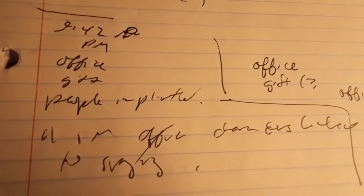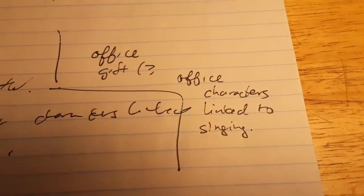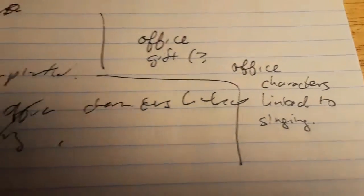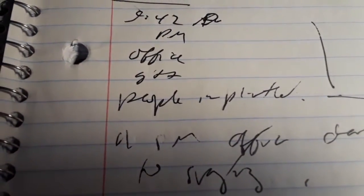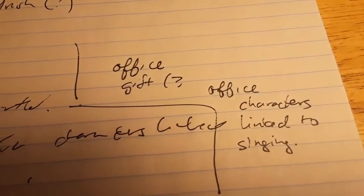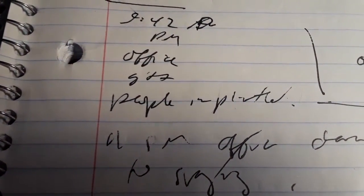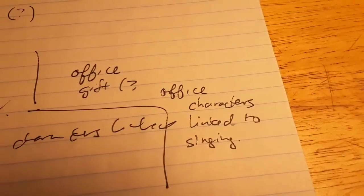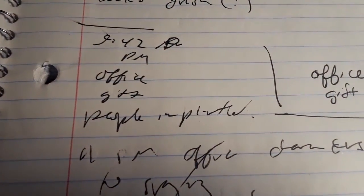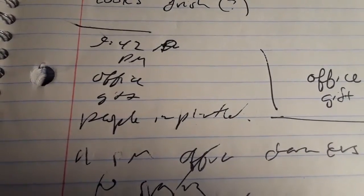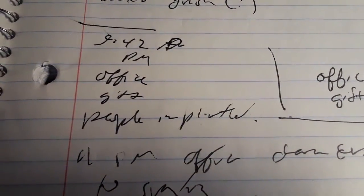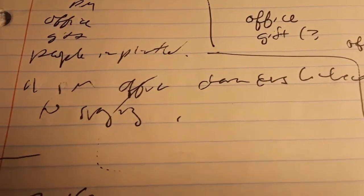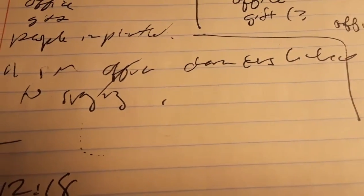Then 9:42 p.m. I write office - what I translated earlier as office gift, office characters linked to singing. But it looks like office gift people implanted or office gets people implanted. I was obviously very sleepy because of how the writing looks. And then office characters linked to singing.